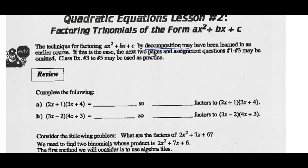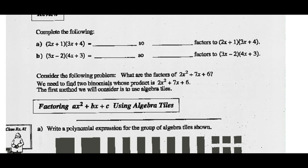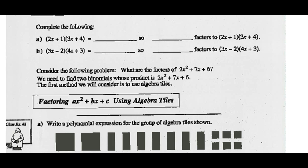Let's do a quick review. Complete the following: 2X plus 1 times 3X plus 4. If we expand this out, 2X times 3X is 6X squared, 2X times 4 is 8X, and 1 times 3 is 3X. 8X plus 3X is 11X, and 1 times 4 is 4. So, 6X squared plus 11X plus 4 factors to be 2X plus 1 times 3X plus 4.